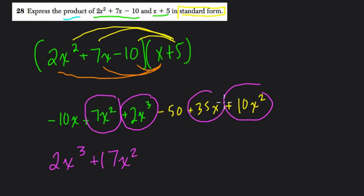Then we have the x terms: 35 groups of x minus 10 groups of x. That's 25 groups of x. And then finally minus 50. The constant goes last. So we have 2x cubed plus 17x squared plus 25x minus 50.